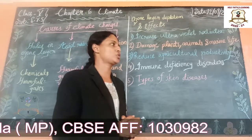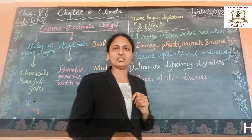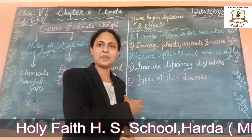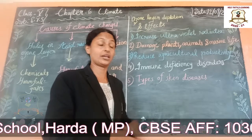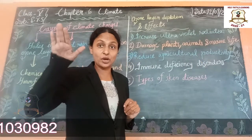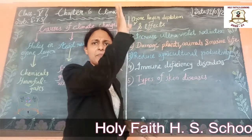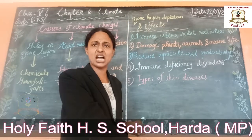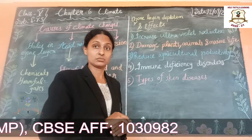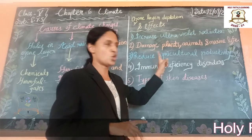Increased ultraviolet radiation can also reduce agricultural productivity — meaning crops will not grow sufficiently. It can damage crops and reduce the overall yield of our farmlands.